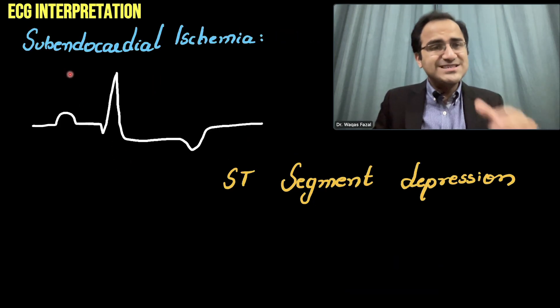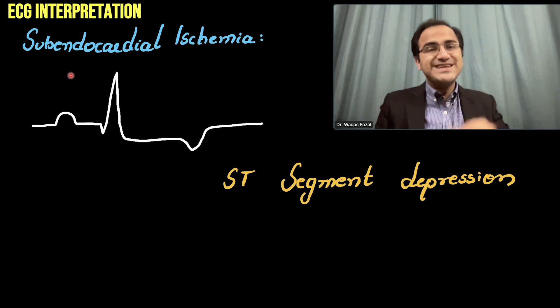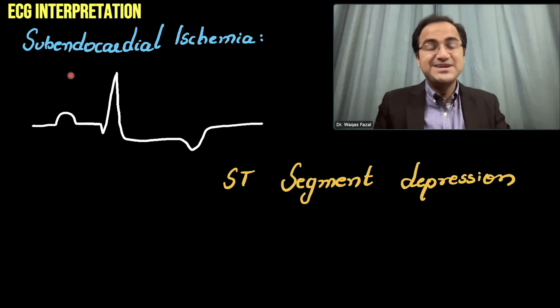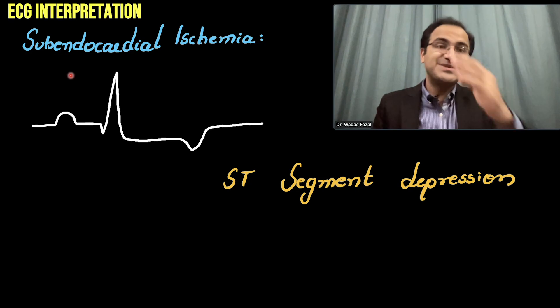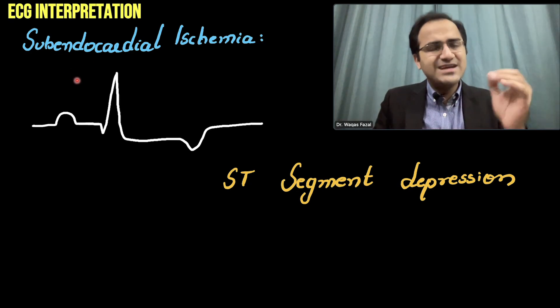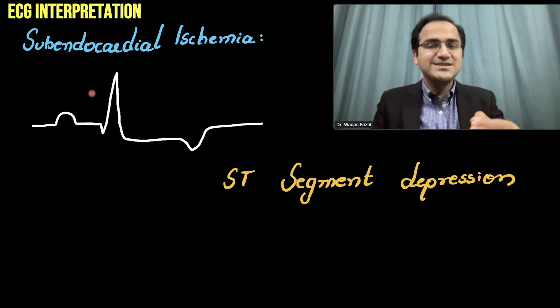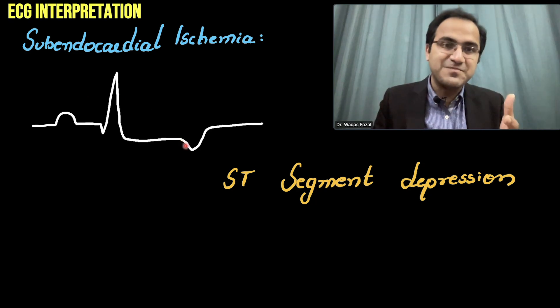Subendocardial ischemia appears different on ECG compared to transmural ischemia. In transmural ischemia, we see ST segment elevations. In subendocardial ischemia, the classical hallmark is ST segment depression.